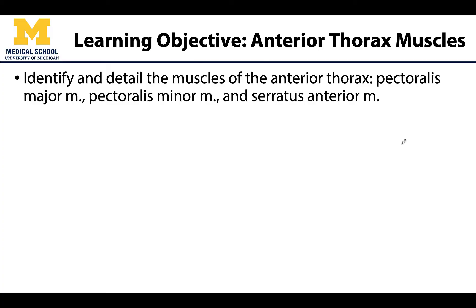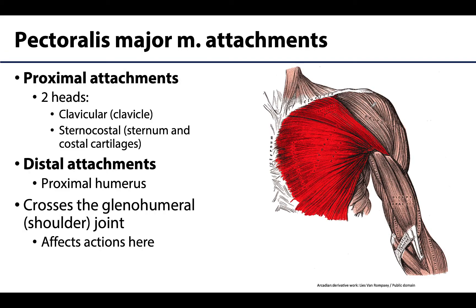These three muscles are going to be the two pectoralis muscles, major and minor, as well as serratus anterior. Let's start with the pectoralis major muscle, which is this large fan-shaped muscle, which has two proximal attachments, or two heads of the muscle. You will have a clavicular head, which you can see here.